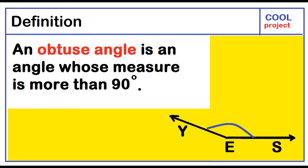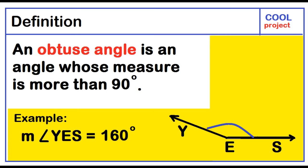An obtuse angle is an angle whose measure is more than 90 degrees. Example: the measure of angle YES equals 160 degrees.